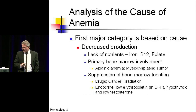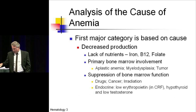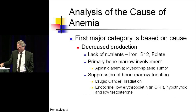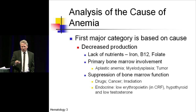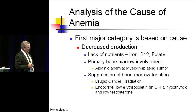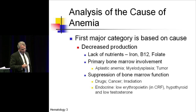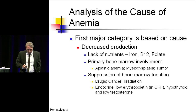When trying to classify anemia, there are two ways to do this. One is the cause and the other is the morphology. The morphology is coming up in the next slide or two and is probably the more common one that we learned during medical school.